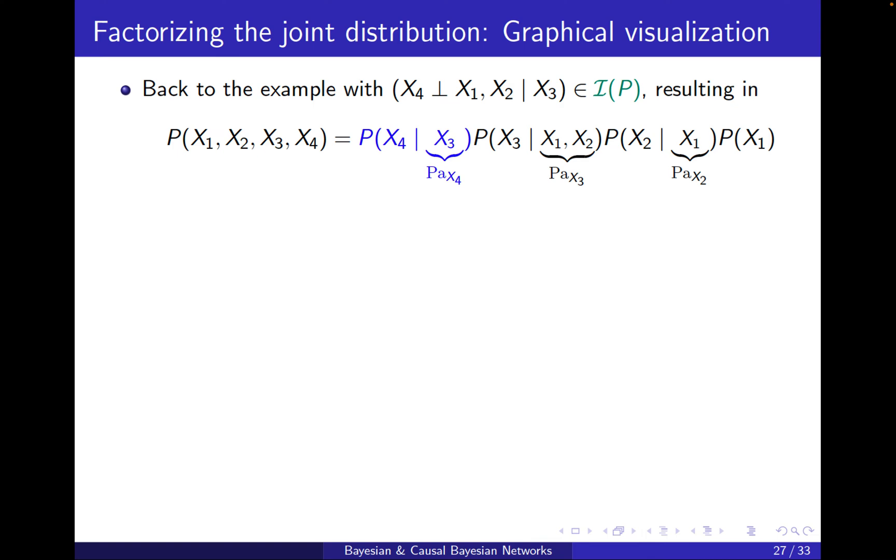To do the visualization, we'll go back to our example on x1 to x4. We saw that the joint distribution of x1 to x4 using this conditional independence could be written in this form of P(x4|x3), and then the rest were just the terms from the chain rule.